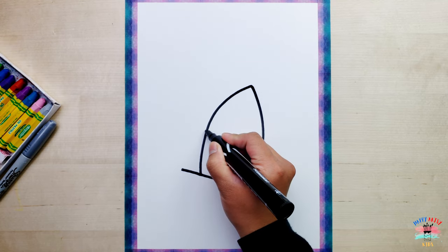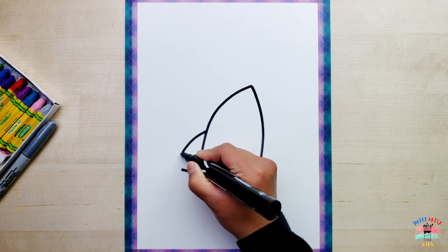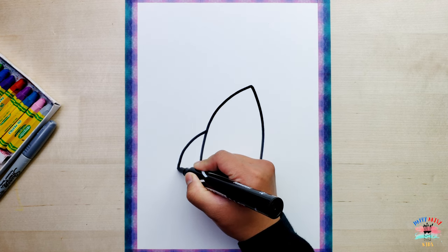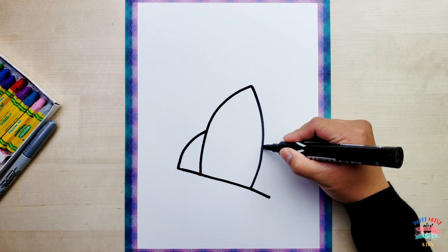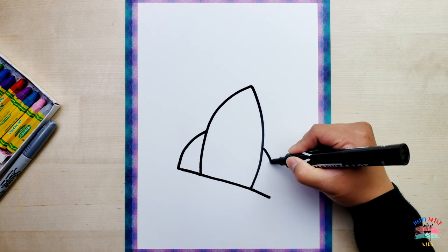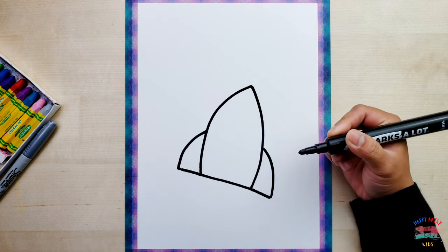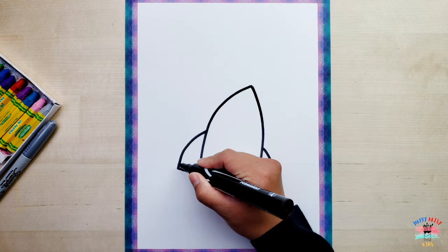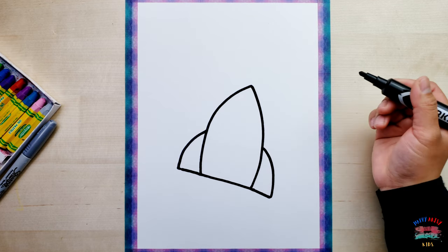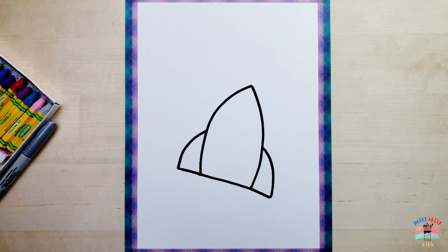and then let's start here going down, and then another one here going down. You can either draw a straight line like that or a curved line like this. Alright,